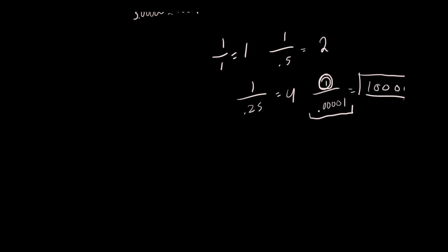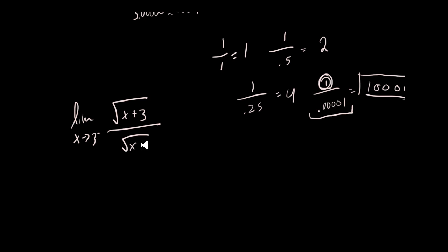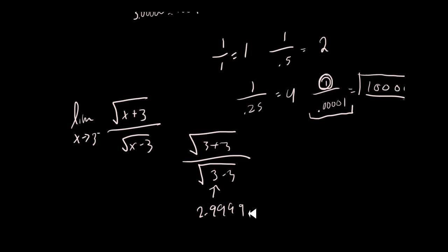Now let's show the case where it approaches from the left. If the limit as X approaches 3 from the negative side, and we plug in — this number would be 2.999...999. The denominator would be negative, and not only that, it would produce an imaginary number because of the square root. So it gives a completely different answer just because of this infinitely small difference.